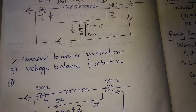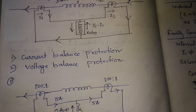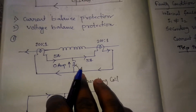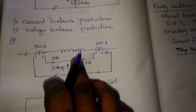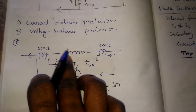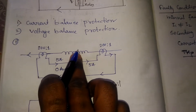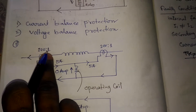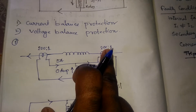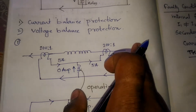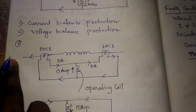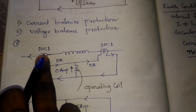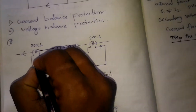Two types of protections are present: current balance protection and voltage balance protection. In the current balance protection scheme, it is for highly costly electrical equipment. We connect the CTs on both sides and the CT ratio is 200:1 on both sides. The current is flowing in a certain direction, suppose 5 amperes from CT1.